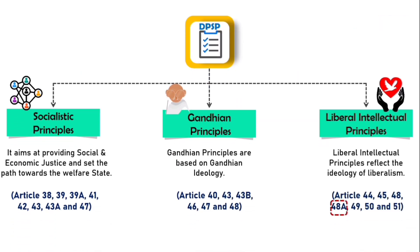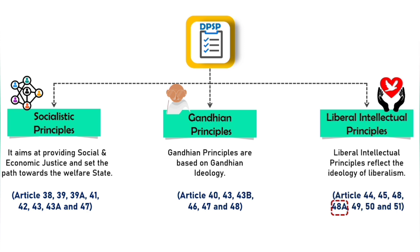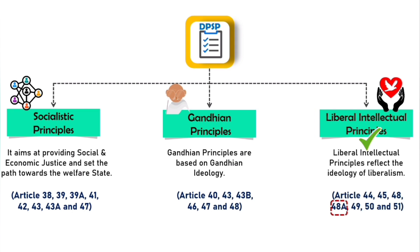Article 48A comes under Liberal Intellectual Principles. As we have already discussed, all the articles of DPSP have been classified into three categories: Socialistic Principles, Gandhian Principles, and Liberal Intellectual Principles, which we discussed in detail in the introductory video of DPSP. If you want to watch that video, you will find the link in the description. So Article 48A comes under Liberal Intellectual Principles.